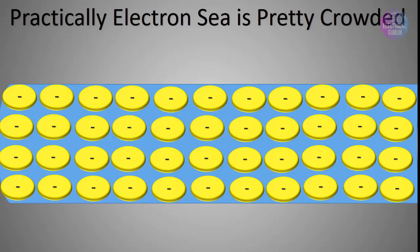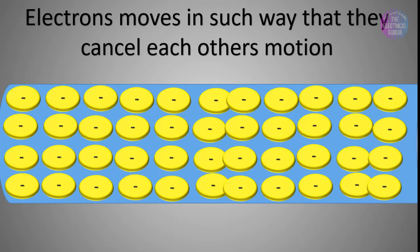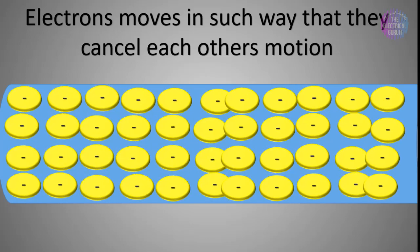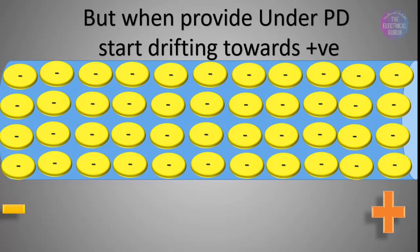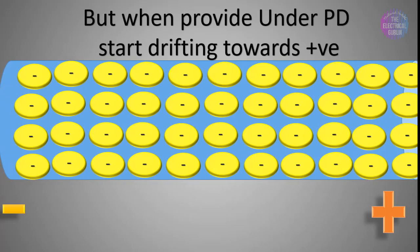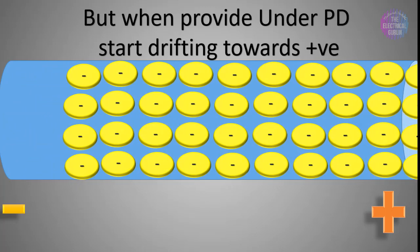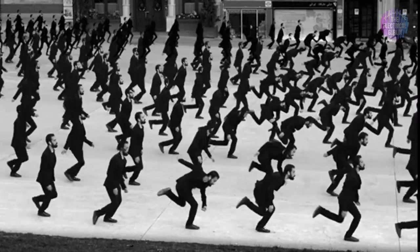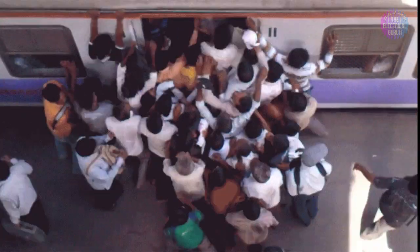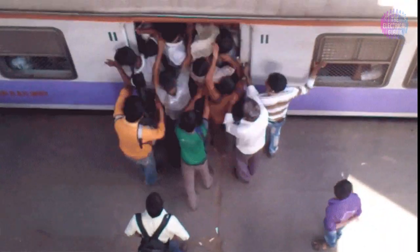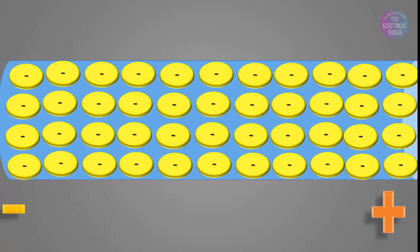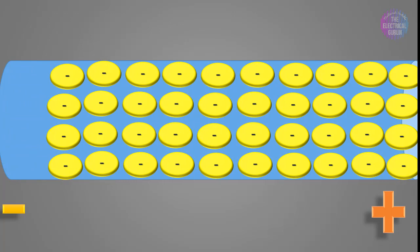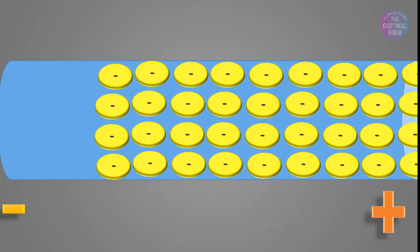Practically, the electron sea is pretty crowded — electrons are situated almost everywhere. Normally they are moving in random directions such that they cancel each other's motion, so the total current produced remains zero. But when placed in an electric field, they start to slowly drift towards positive potential. Because they are very crowded, the speed is very very low. It's just like walking in a crowd — you cannot run at your usual speed, you are just going to push the person in front of you. The same happens with electrons: they move towards positive potential but at a very slow speed, drifting and pushing neighboring electrons.